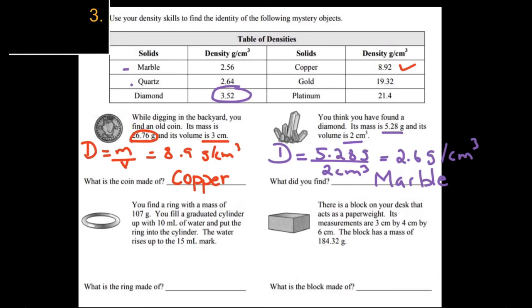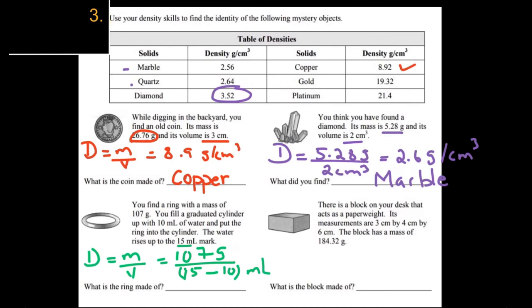You find a ring with a mass of 107 grams. A graduated cylinder is filled with 10 milliliters of water and the ring is placed in; the water rises to 15 milliliters. So the volume of the ring is 15 − 10 = 5 milliliters. D = 107 ÷ 5 = 21.4 grams per centimeter cubed, which matches platinum. So the ring is made of platinum.